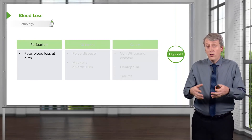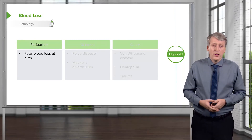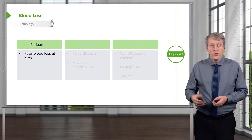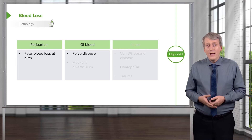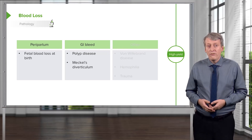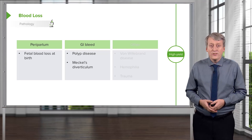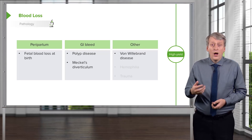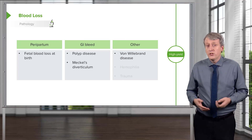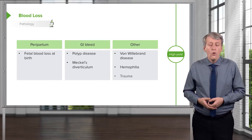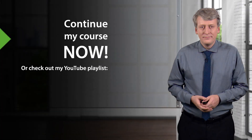In blood loss situations, babies at birth can experience blood loss through a difficult labor and loss of blood through the umbilical stump. In GI disease, patients may have polyps or a Meckel's diverticulum causing excessive bleeding. Other causes include bleeding disorders like von Willebrand's disease or hemophilia, or severe trauma.